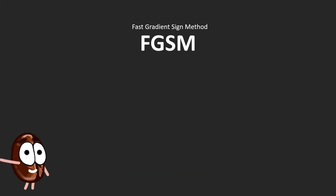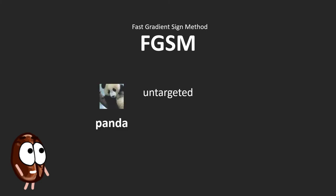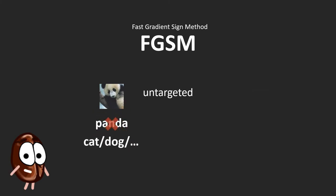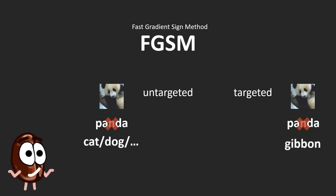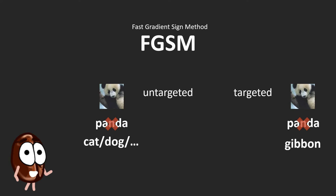This noise attack was an untargeted white-box attack. Untargeted means that we manipulated the input such that the response of the network is anything but the true label — we just ensured that the network misclassifies the panda, mistaking it for something else. The opposite of an untargeted attack is of course a targeted one, where we want the network to misclassify the panda and label it with a specific label, for example gibbon and nothing else. The fast gradient sign method as presented here is untargeted, but it can also be used in targeted attacks with a minor modification: by computing the negative loss with respect to the target class instead of the positive loss of the true class.